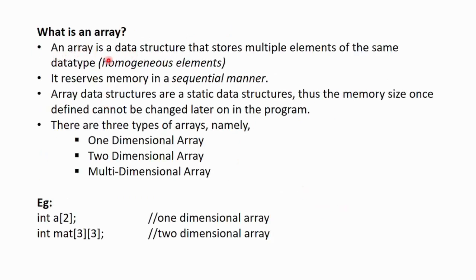An array is a data structure that stores multiple elements of the same data type. That is, it stores the homogeneous elements. It reserves the memory in a sequential manner, one after the other. Array data structures are static data structures.